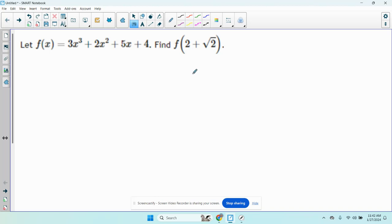Okay, so this says let f of x be this thing. Find the function value at 2 plus the square root of 2. So I'm just going to rewrite it and replace every x with 2 plus the square root of 2. And then we're going to have to FOIL this out three times, FOIL this out, and then distribute.